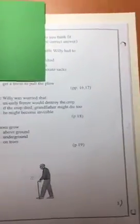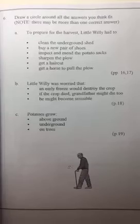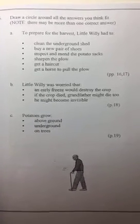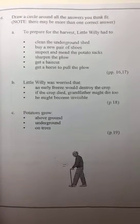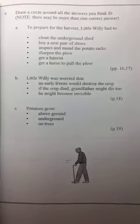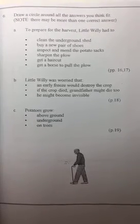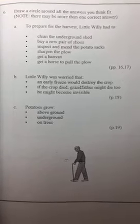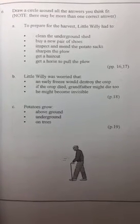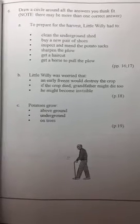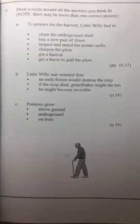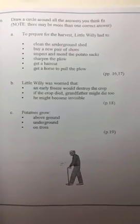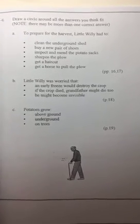Another option, if the child has written output challenges, is to prepare something that looks like this. In this situation, you give the child several answers to choose from. For example, 'To prepare for the harvest, little Willie had to...' and then there are several options. You can direct them to the correct answer by providing the page number after the question, so the child goes to that page, finds the answer, and just has to circle it rather than writing it all out.